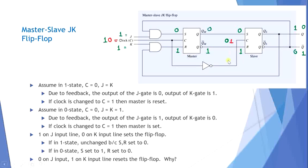The output of the master-slave JK flip-flop is toggled when J=K=1 as a result of the control signal changing from 0 to 1 and back to 0. Now assuming the flip-flop is at state 0 with J=K=1 and clock=0: Q=0 and Q̄=1, so S=1 and R=0. When clock goes to 1, the master enters state 1, which is subsequently transferred to the slave when the clock returns to 0 — again the state toggles.